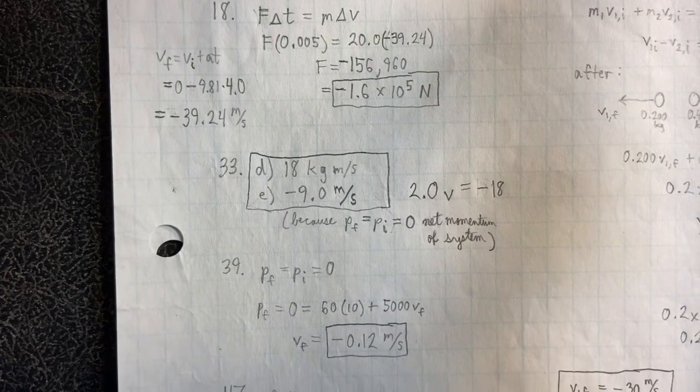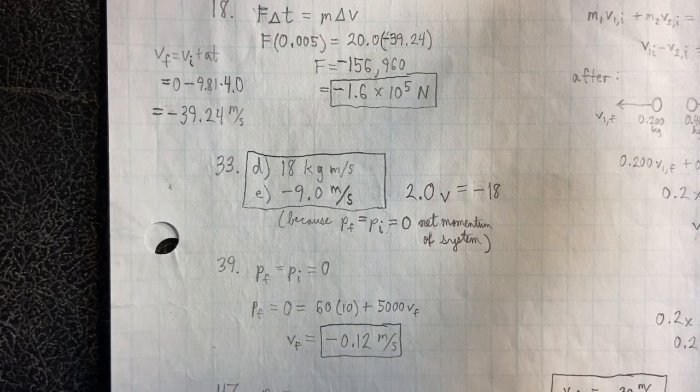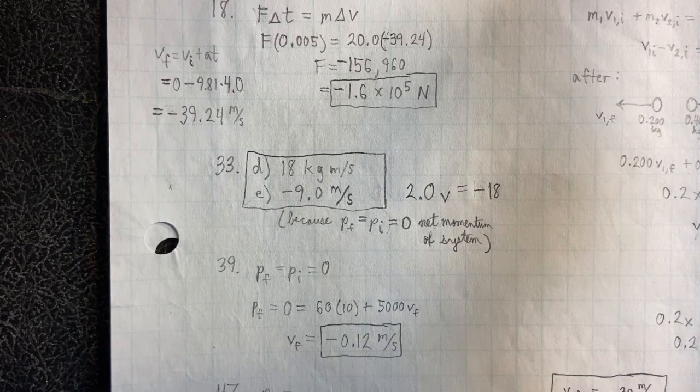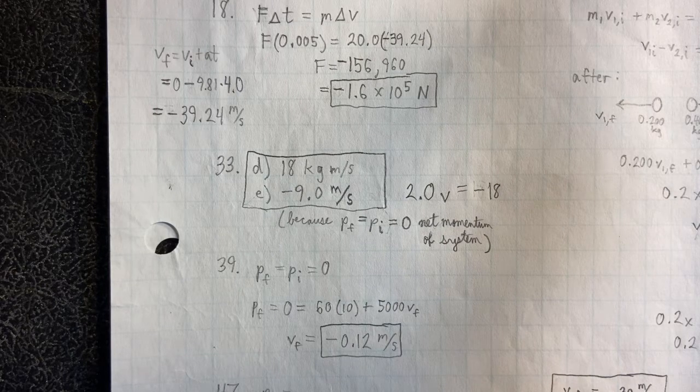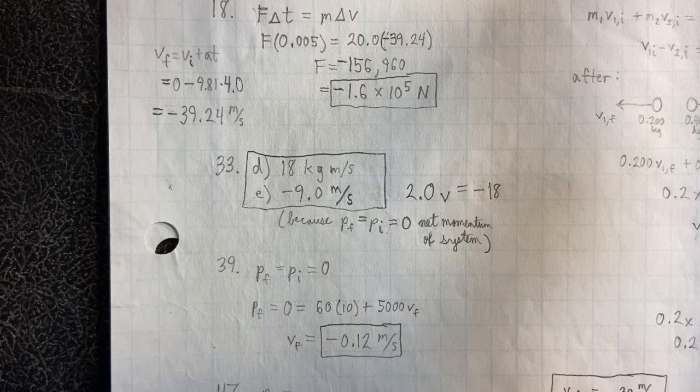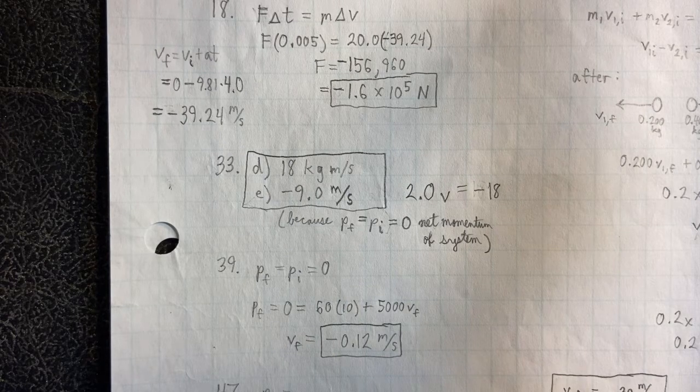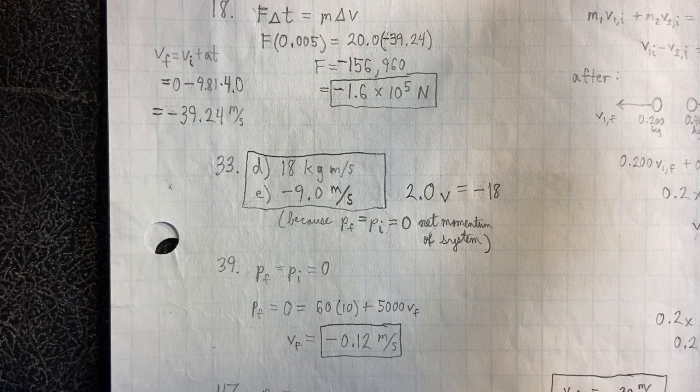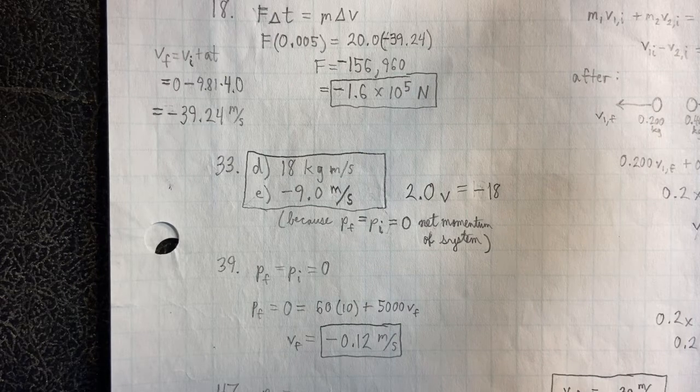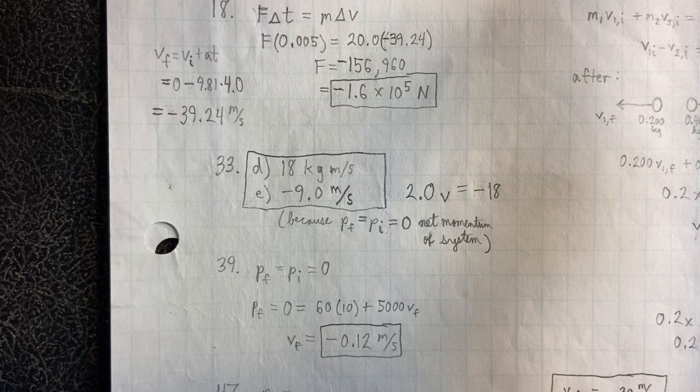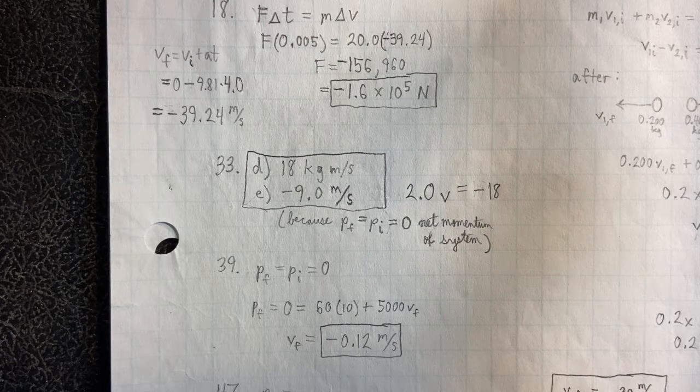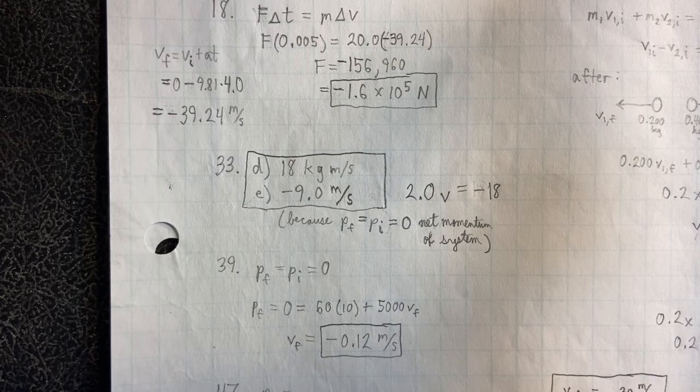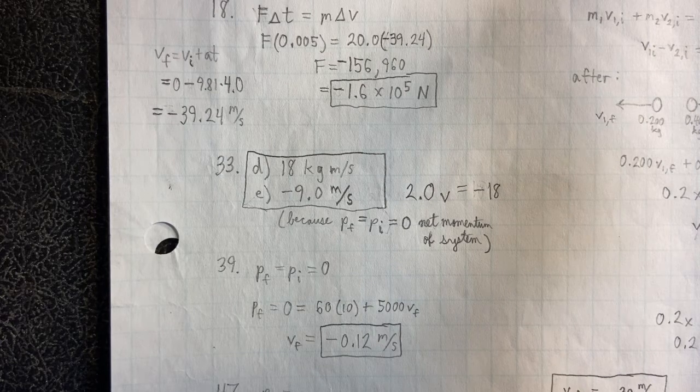All right, in 39, we're asked to find that final velocity, and we know that momentum is conserved. So the final momentum equals the initial momentum, which equals zero. Now, in order for that to be true, the setup is that we have one MV plus another MV, and so that's going to be negative 0.12 meters per second.